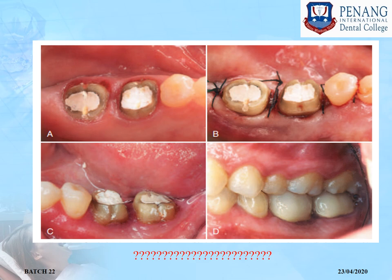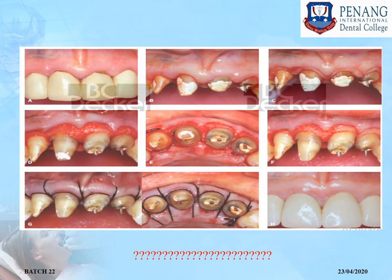After the flap is reflected, osseous contouring is done, suturing is performed, and this is how it looks after healing and placement of the prosthesis. In another example where probing depth was less than 3 mm, a modified Widman flap was performed. An incision was given 1–2.5 mm from the gingival margin, the tissue collar was removed, followed by osseous contouring; there is an increase in the dimension of crown structure. Suturing was done and this is how it looks after healing and placement of the prosthesis.